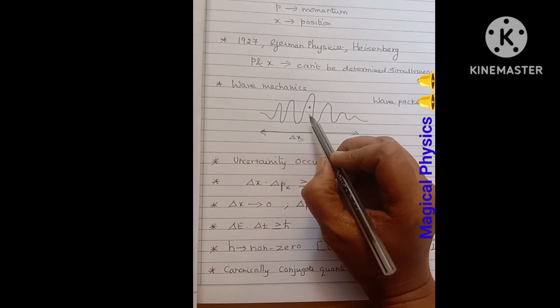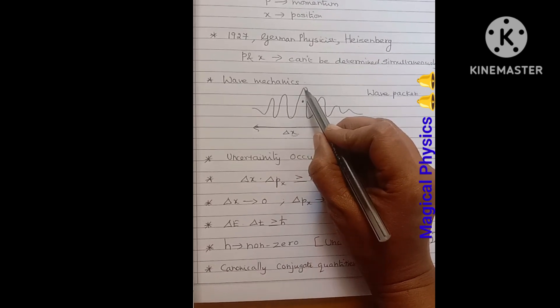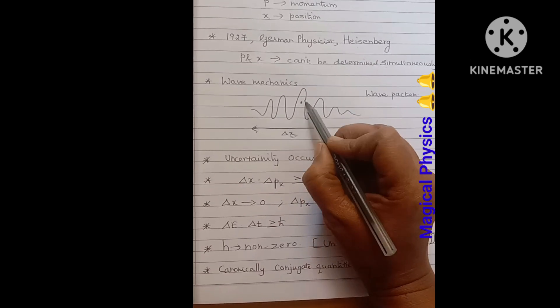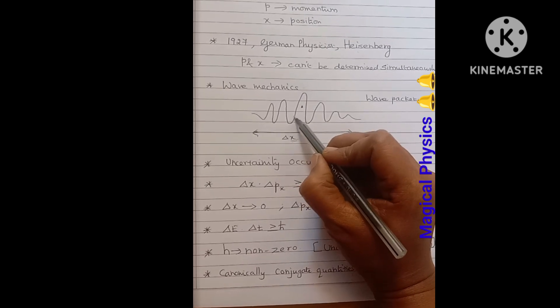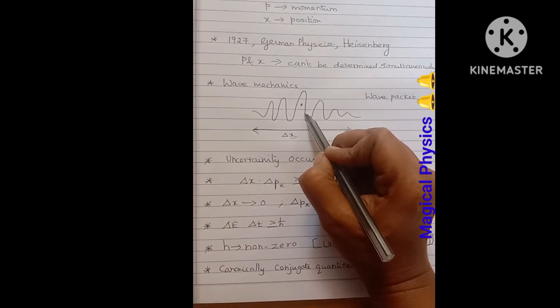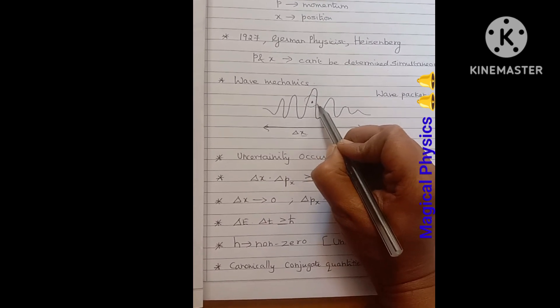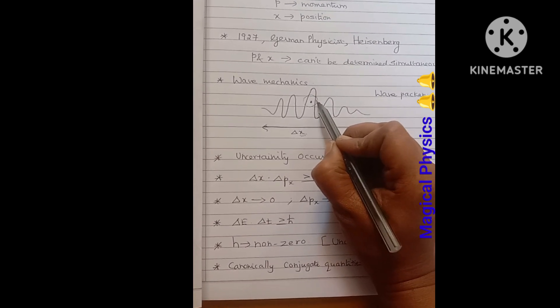Mainly, the probability will be where the amplitude is maximum. Here you can see this line amplitude is maximum. So most probably the particle can be here at this location.